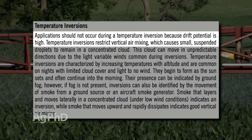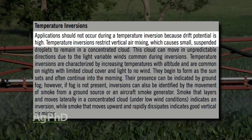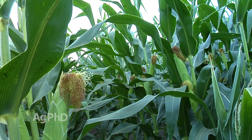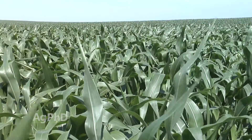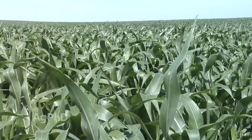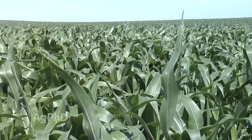It's these inversions that we're really concerned about, because if we have inversions, even though there's no wind, that product could move to the side — and we really don't want to see that. When we do have wind, it mixes the air better and the inversion goes away. So whenever we have a little bit of wind, we're not nearly as worried about a temperature inversion.